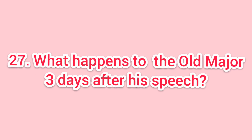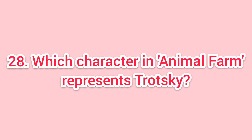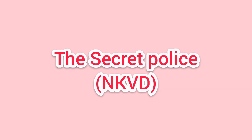Twenty-seven: what happens to Old Major three days after his speech? Answer: he dies. Twenty-eight: which character in Animal Farm represents Leon Trotsky? Answer: Snowball. Twenty-ninth question: the dogs in Animal Farm can be said to represent? Answer: the secret police, the NKVD.